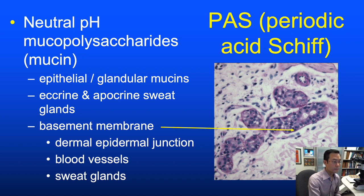These PAS-positive mucins are different from stromal mucins such as those increased in lupus. These are epithelial or glandular mucins seen in sweat glands and basement membranes along the dermal-epidermal junction. The staining color is a magenta pink.